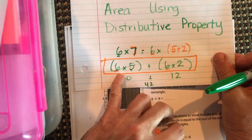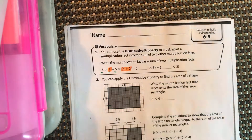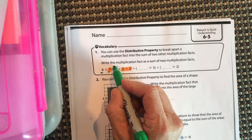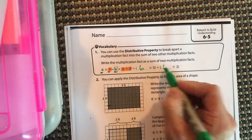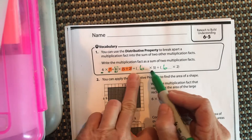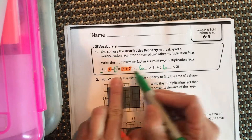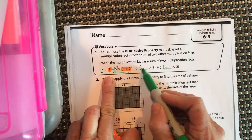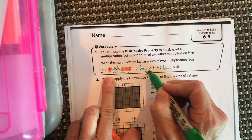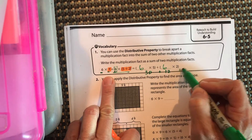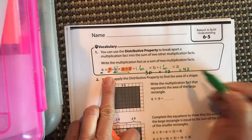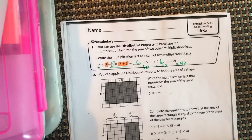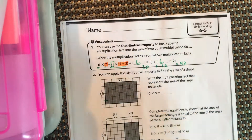So we have six times five and six times two — the six is staying the same. Six times five is 30, plus 12 equals 42. When calculating area, the distributive property can also help us.